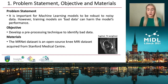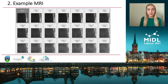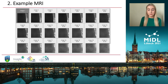We use the MRNet dataset for this study, which is an open source knee MRI dataset, and we use the data acquired from the sagittal plane. Here is an example of what we define as bad data: this is an MRI acquired from the sagittal plane, and as you can see, as you move through the images, there is no anatomical information present within the field of view.